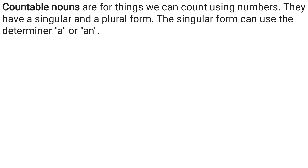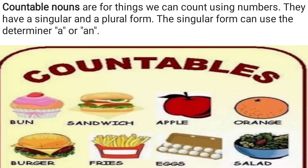The singular form can use the determiner 'a' or 'an'. Anything which you can count — any naming word you can count — is known as a countable noun. For example, you can count: table, bun, sandwich, apple, orange, burger, fries, eggs, salads, fans, tube lights, and many more things.